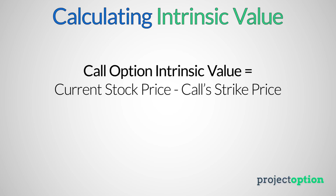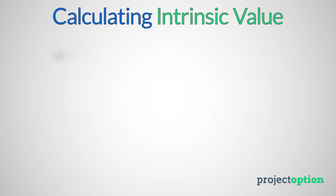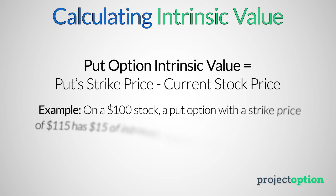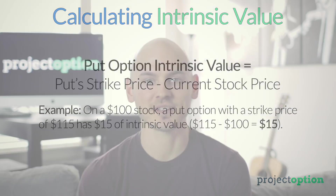For call options, intrinsic value equals the current stock price minus the call's strike price. So if we have a stock price of $155 and the call option strike price is $100, that gives us $55 of intrinsic value. For put options, intrinsic value equals the put's strike price minus the current stock price. So if we have a stock price of $100 and a put with a strike price of $115, that gives us $15 of intrinsic value.